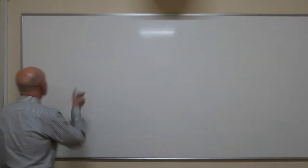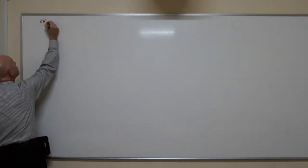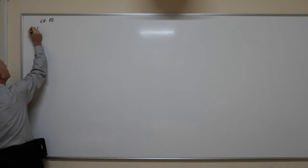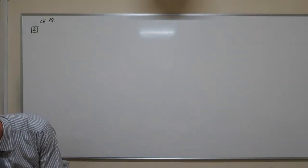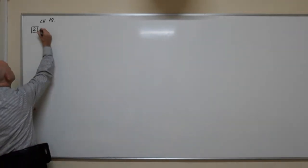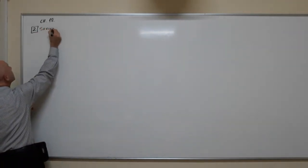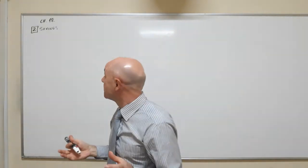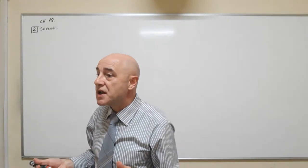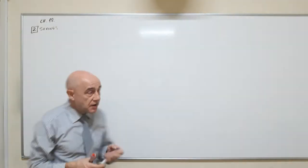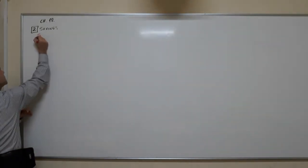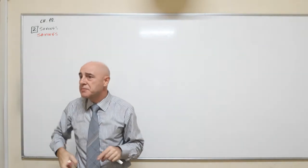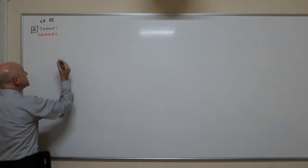Chapter 18. I'm moving to section 2, and section 2 is simply saving — saving and investing. We begin with something important, but it's very easy. We first ask: what is saving? Or savings. Sometimes used in singular, sometimes in plural. Savings is very simple.